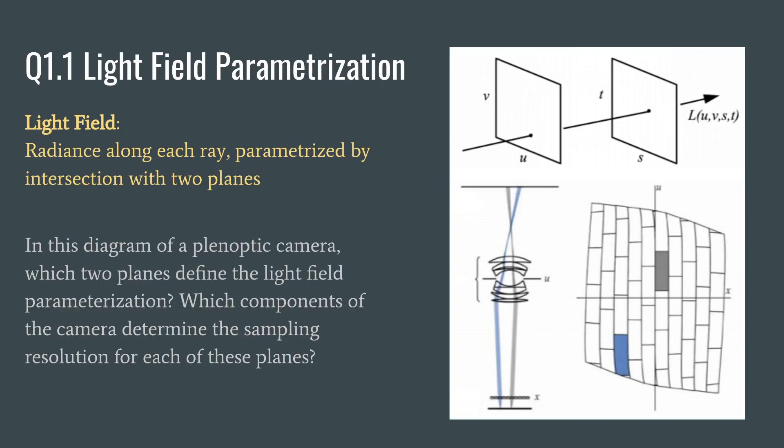In this diagram of a plenoptic camera, which two planes define the light field parameterization? Which components of the camera determine the sampling resolution for each of these planes?